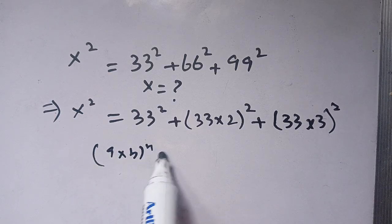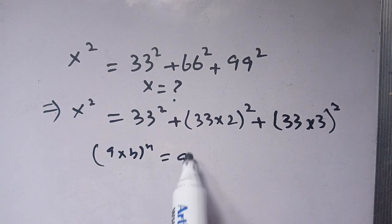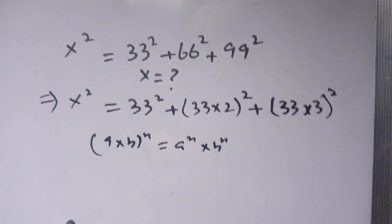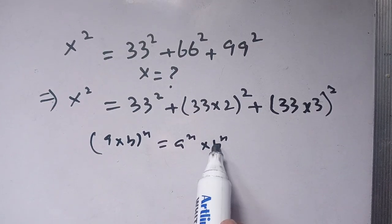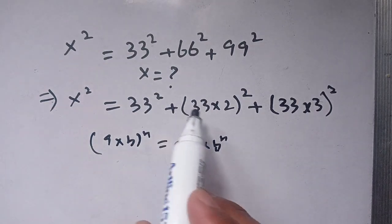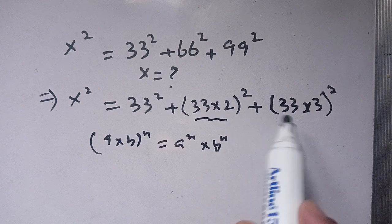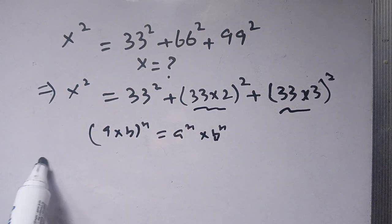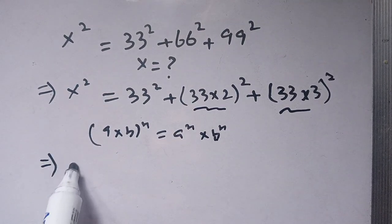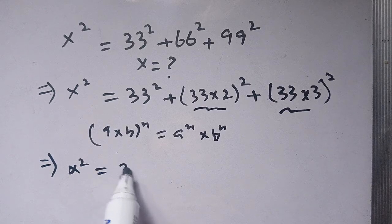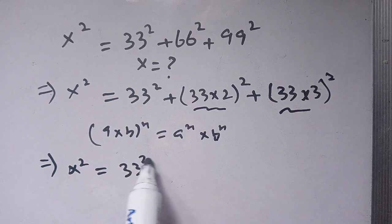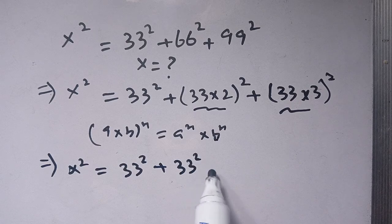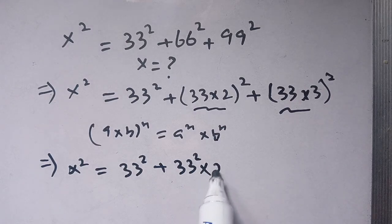In the next step, we know that (a times b) to the power n is equal to a to the power n times b to the power n. Now we use this identity in these terms, and we get x squared is equal to 33 squared plus 33 squared times 2 squared.